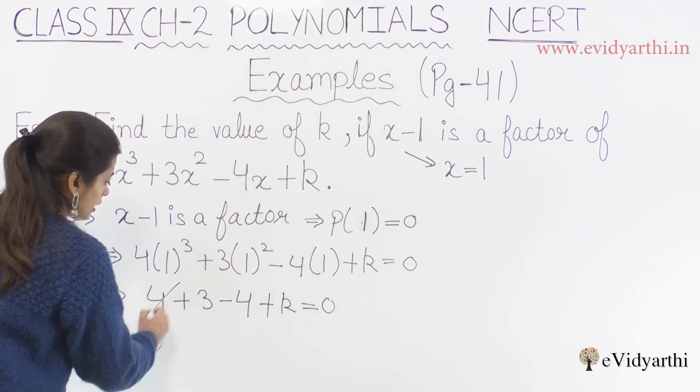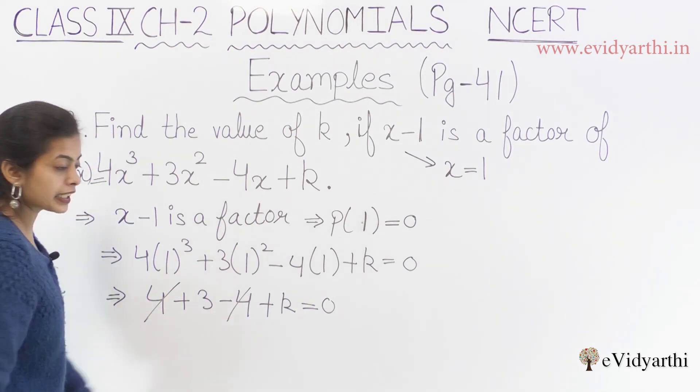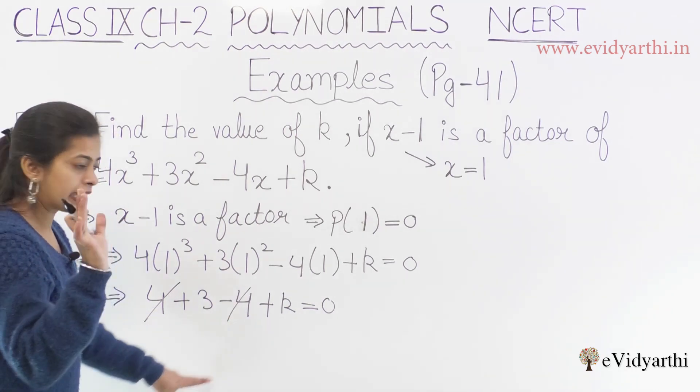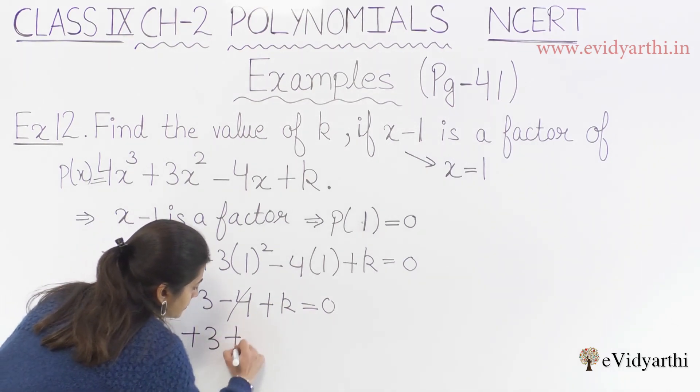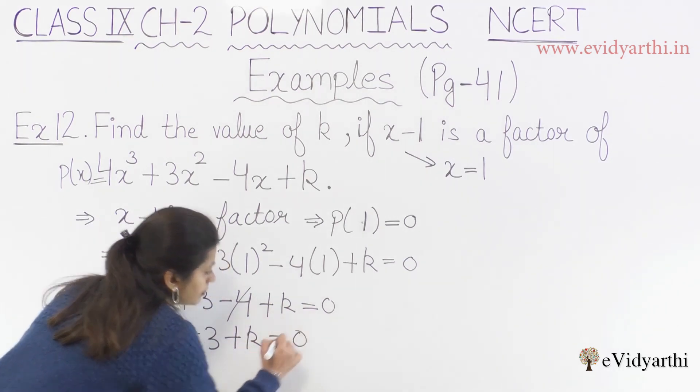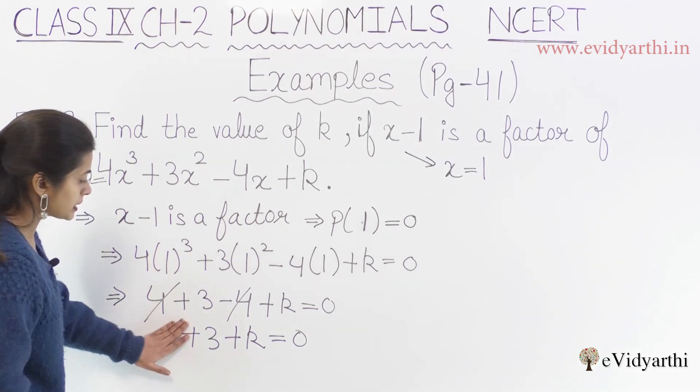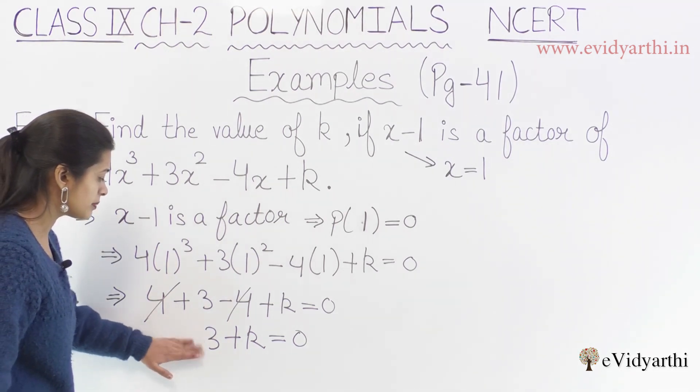It's very easy. 4 times 1 cubed is 4, 3 times 1 squared is 3. The 4 and minus 4 cancel out. We're left with 3 plus k.